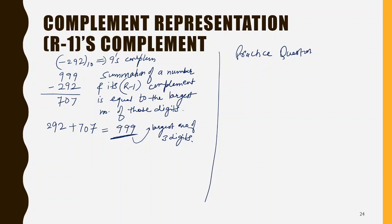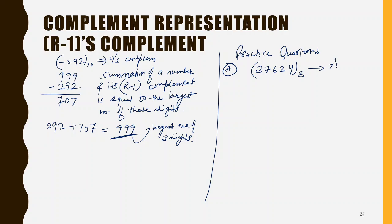I am putting some practice questions for you. The first practice question is: find the 7's complement of 37624 in octal.